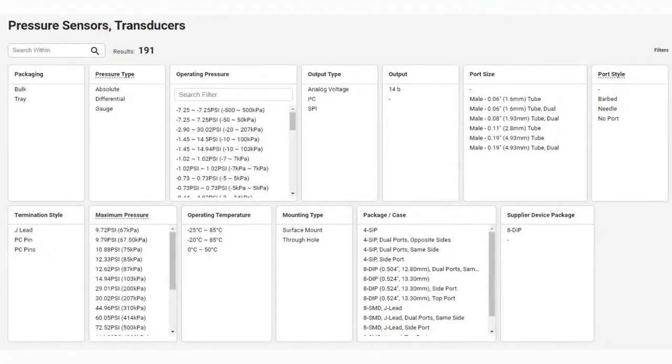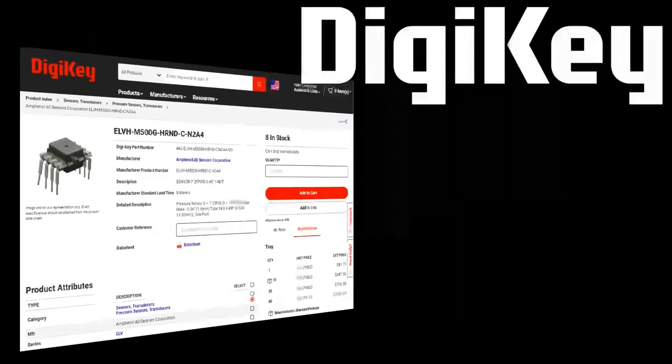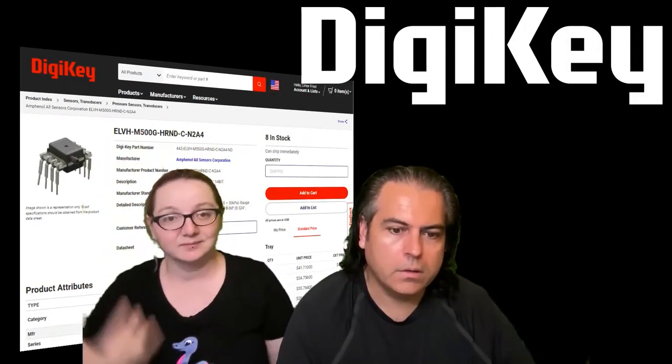So, you know, go to DigiKey, you can type in ELVH, and then, you know, search within pressure sensors, transducers, and pick your desired pressure, your desired mounting style, and your interface analog, I squared C or SPI. Available on DigiKey. I picked this one, but again, many of them are in stock. Yeah, all available on DigiKey. All right. And that is this week's Eye on MPI.